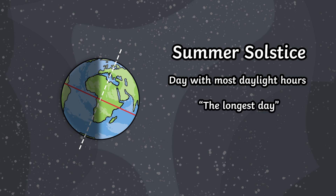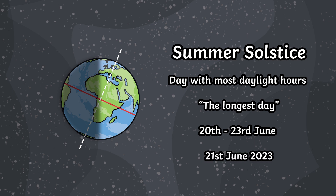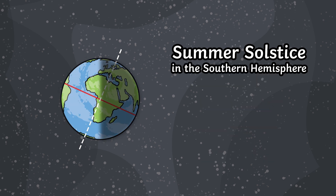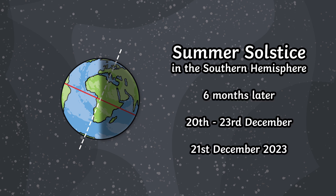In the northern hemisphere, this date is between the 20th and 23rd of June. In 2023, the summer solstice is on the 21st of June. In the southern hemisphere, the summer solstice is exactly six months after ours, so this year it will be on the 21st of December.